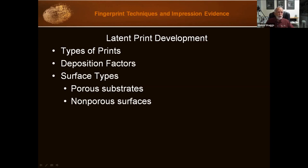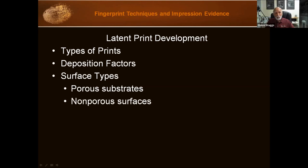Non-porous surfaces are surfaces that don't absorb — they repel moisture and often appear polished. These include glass, metal, plastic, lacquered or painted wood, and rubber. Latent prints on these substrates are more susceptible to damage because the fingerprint residue resides on the outermost surface and can be disturbed or rubbed away. We're going to use powders, or perhaps cyanoacrylate (super glue) with dye stain.